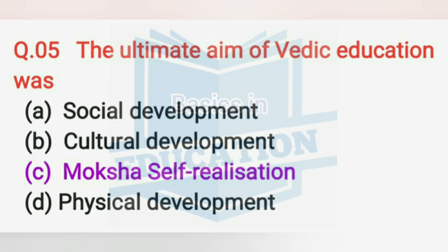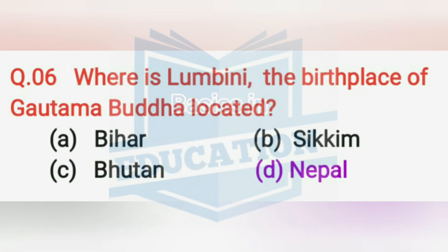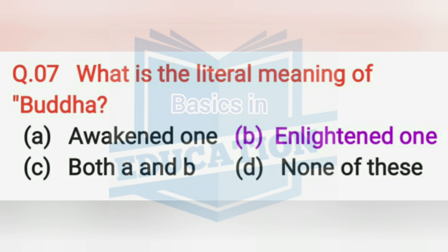The ultimate aim of Vedic education was Moksha — self-realization. Lumbini, the birthplace of Gautam Buddha, is located in Nepal. The literal meaning of Buddha is 'enlightened one.'